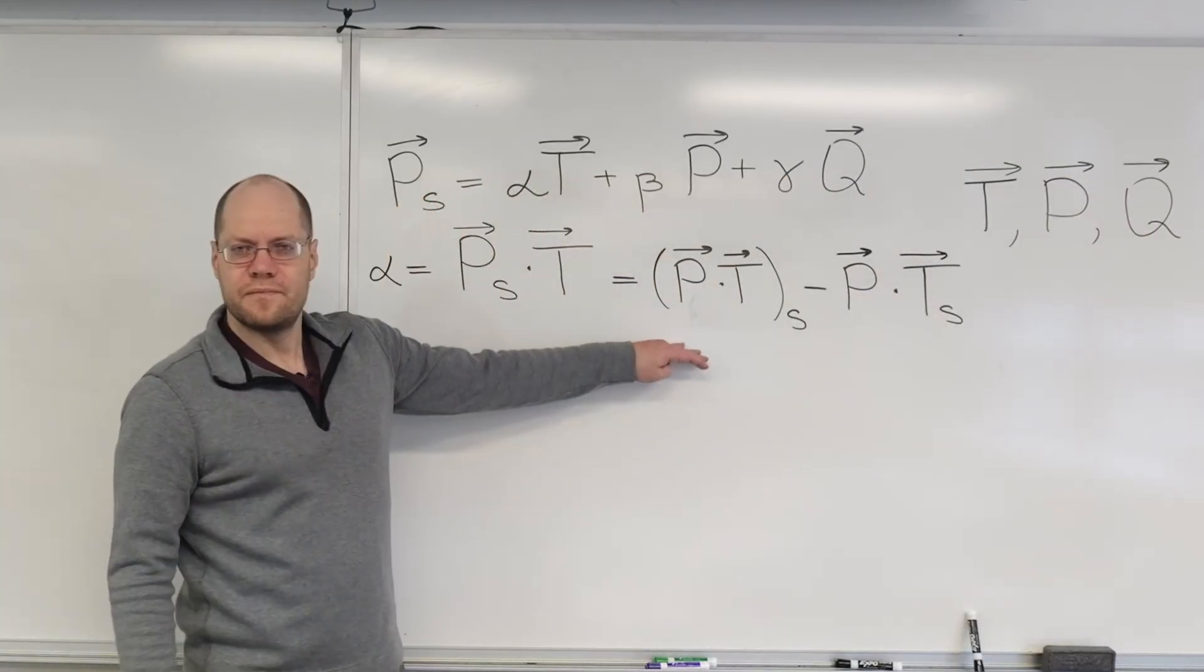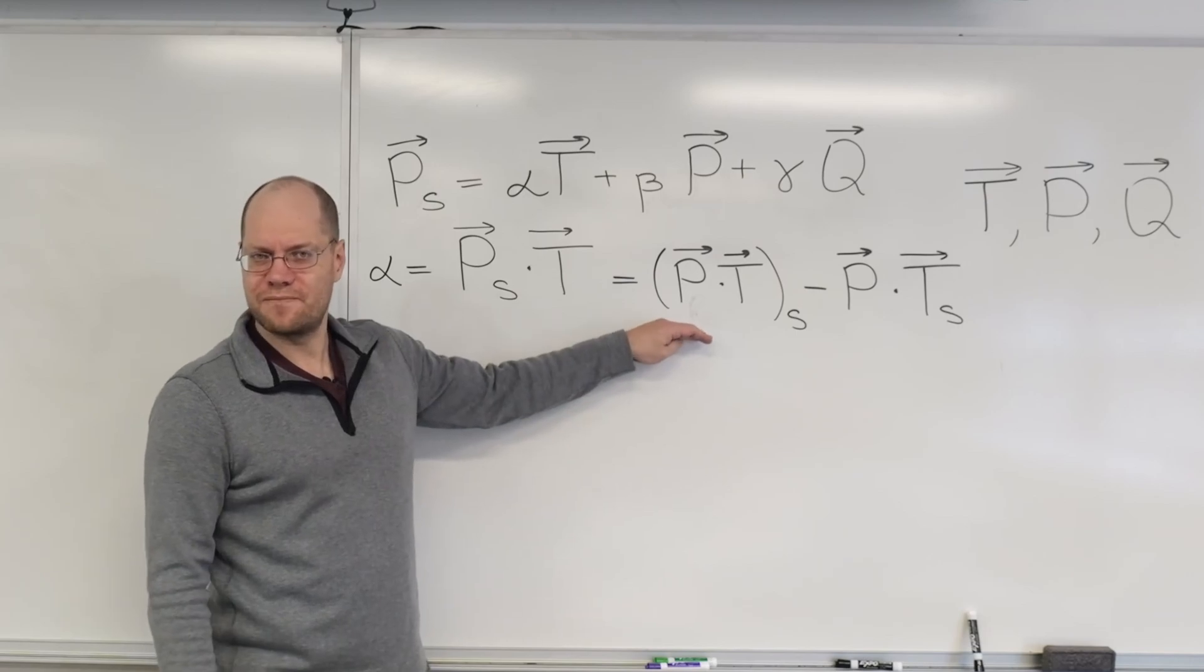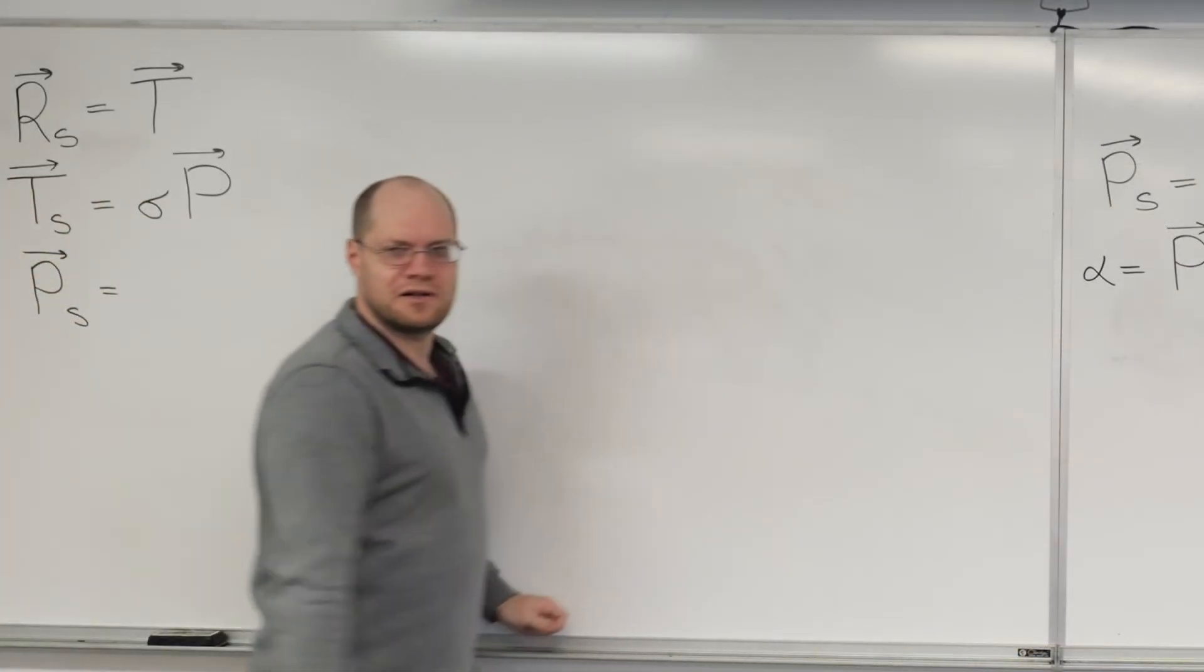We can write the product of this derivative and the vector itself in the following way. It's the derivative of their product. Okay, so sometimes this is a little bit confusing. So let me show you very quickly where it comes from.